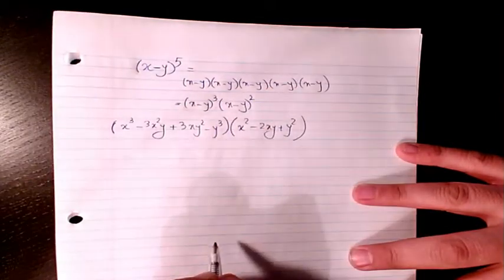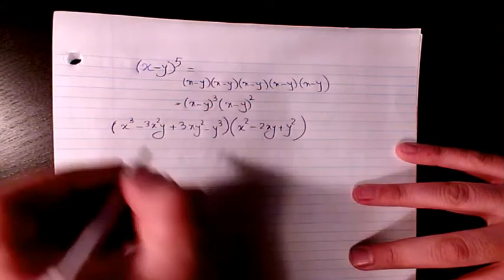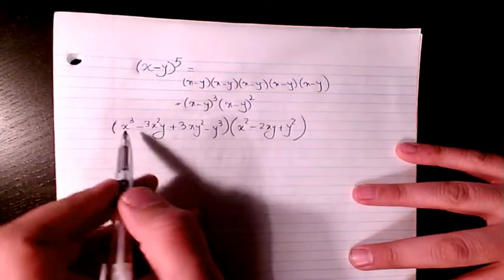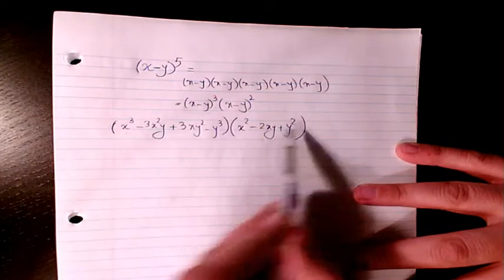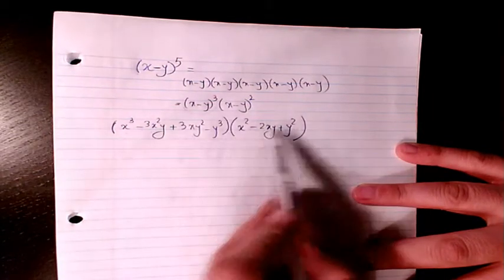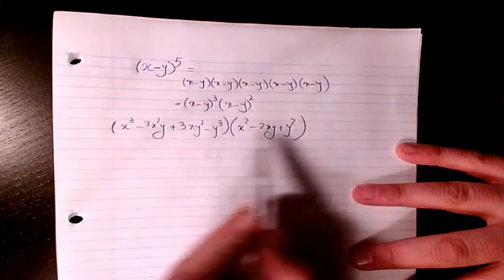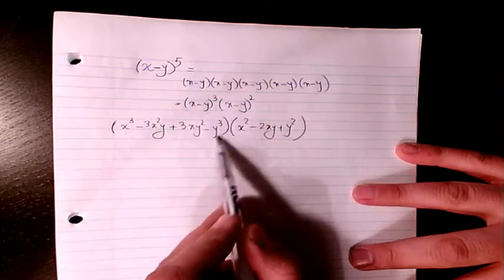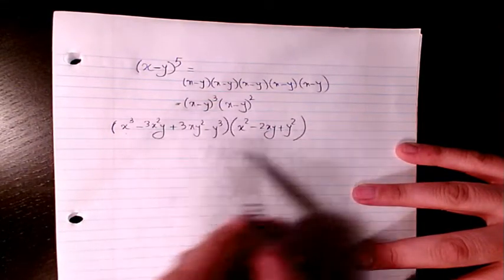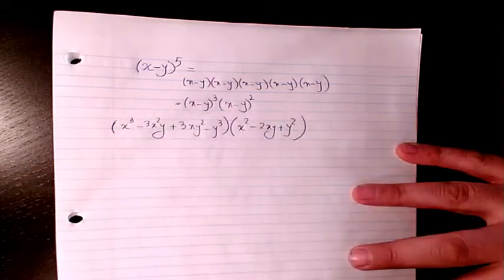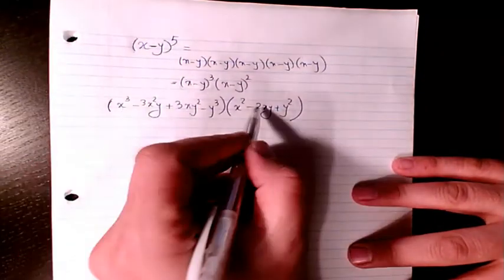Now we start expanding it. I will multiply x cubed by this one, this one, and this one, then this term by each of those, then this term multiplied by each of them, and finally the last term multiplied by all terms. At the end we need to have 12 terms, and we start simplifying them.